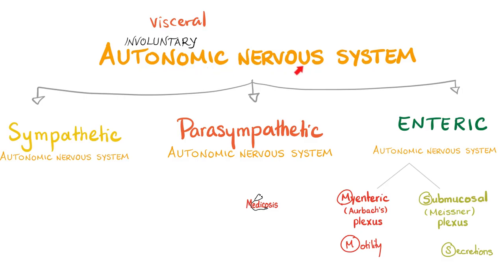If you ask the average nursing student, medical student, or even the average doctor what are the types of the autonomic nervous system, most people say sympathetic and parasympathetic. But that's a big mistake, because the enteric nervous system is also part of the autonomic nervous system and it too deserves a seat at the table. The enteric nervous system is made of myenteric and submucosal plexuses. But for today, we'll focus on sympathetic and parasympathetic.